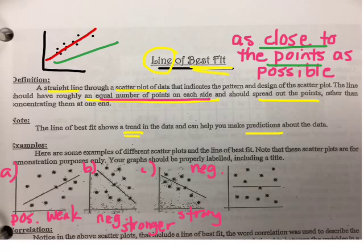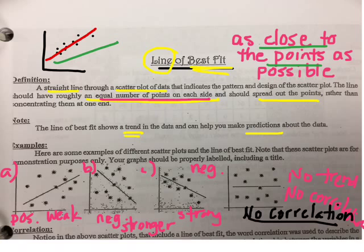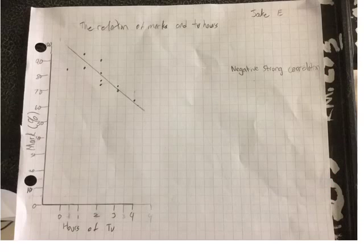What about D? So, is there a trend here? Look at the points, they're all scattered all over the place. Would there be a trend in this data? No. There's no trend in the data. So, no trend. No correlation. This data is not related. Okay? There's no relationship between the two variables there.